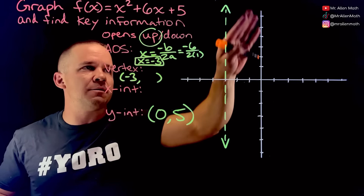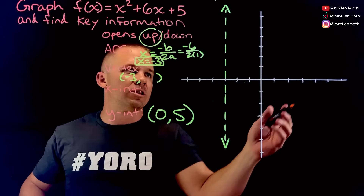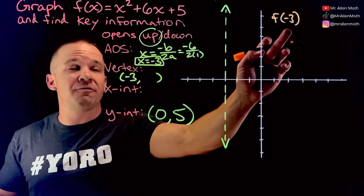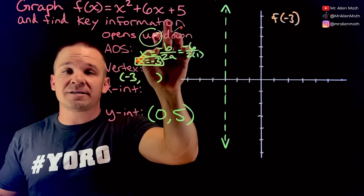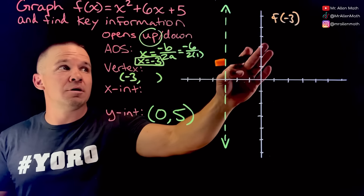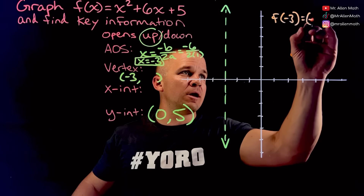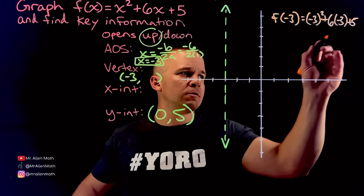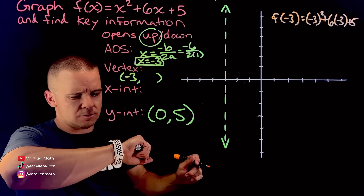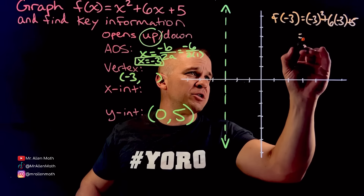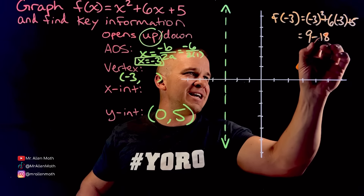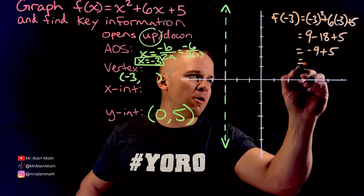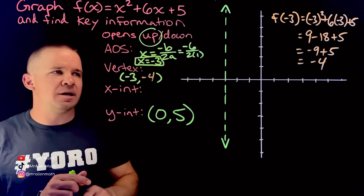I'm going to work the vertex over here. So I've got f of negative three — we're plugging negative three in for all of our x's. That's function notation. So I get negative three squared plus six times negative three plus five. Negative three squared is nine; six times negative three is negative eighteen; plus five. Nine minus eighteen plus five: I've got negative nine plus five, which is going to be negative four. So I got my vertex.